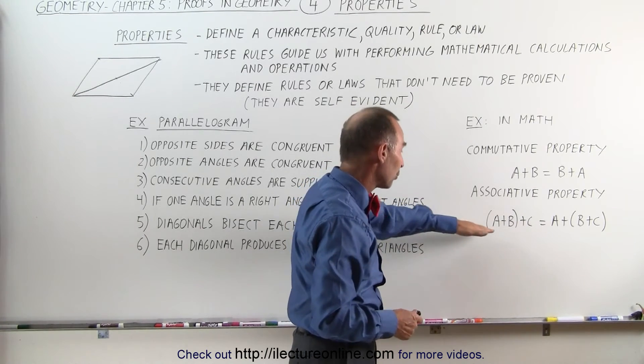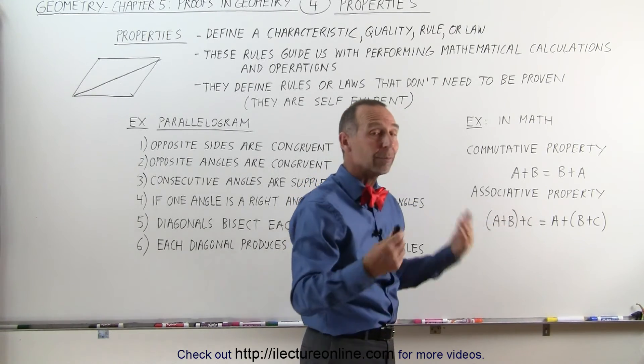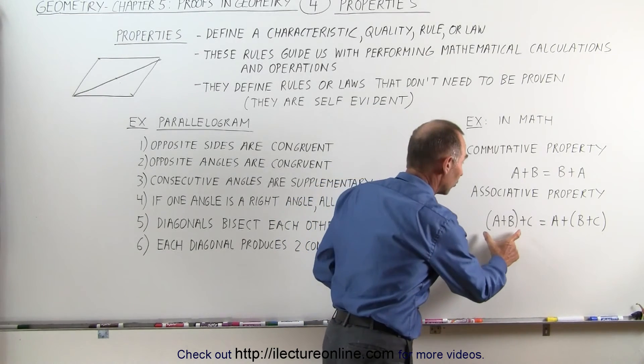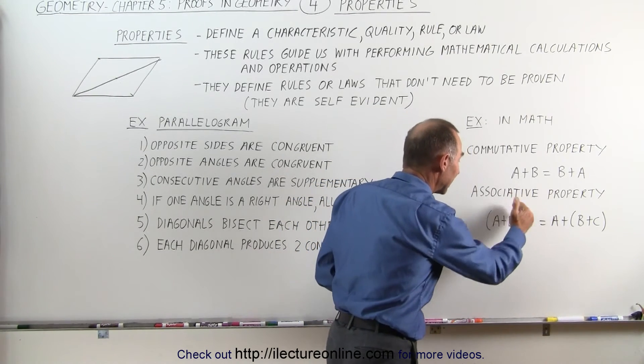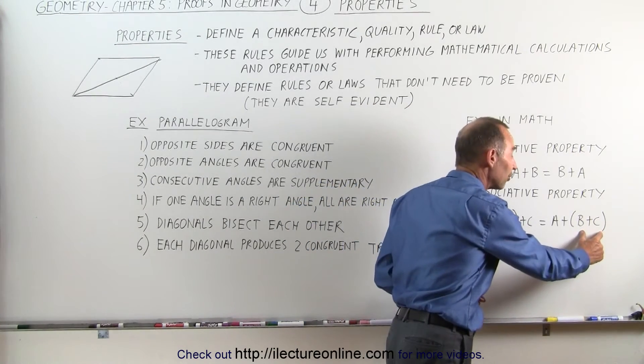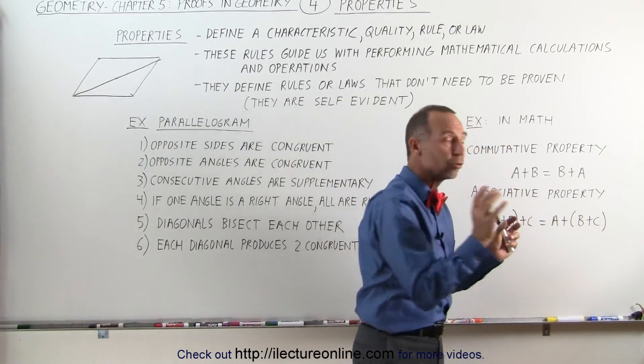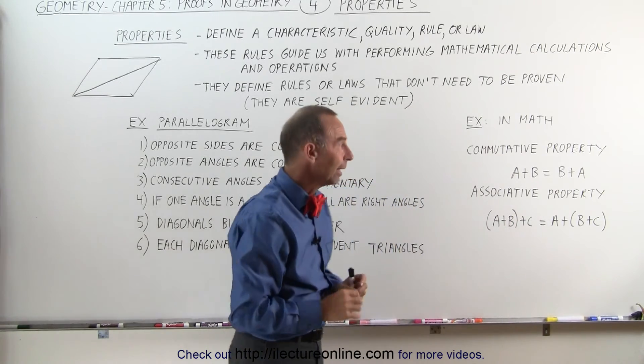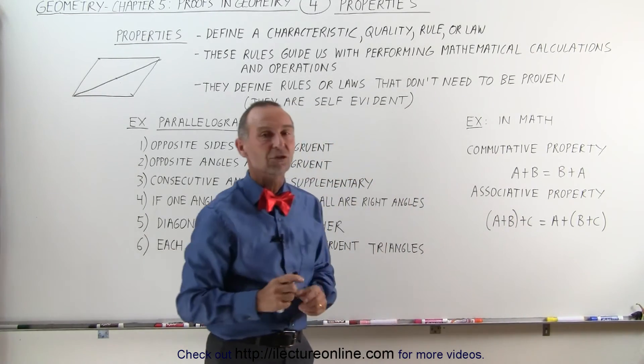Associative property means that if we have three, for example, A, B, and C, and we add them together, we can first associate the first two together. We can add A plus B first and then add C to that, or we can add B plus C first and then add A to that, and those two sums are equal. That is a property of addition as well.